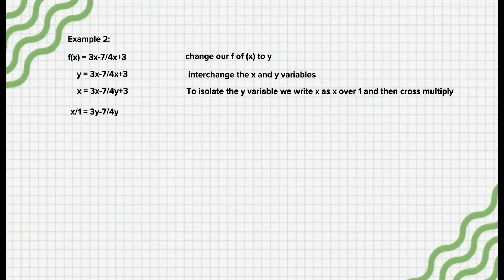So, from x/1 = (3y - 7)/(4y + 3), we have x(4y + 3) = 3y - 7, which gives us 4yx + 3x = 3y - 7.